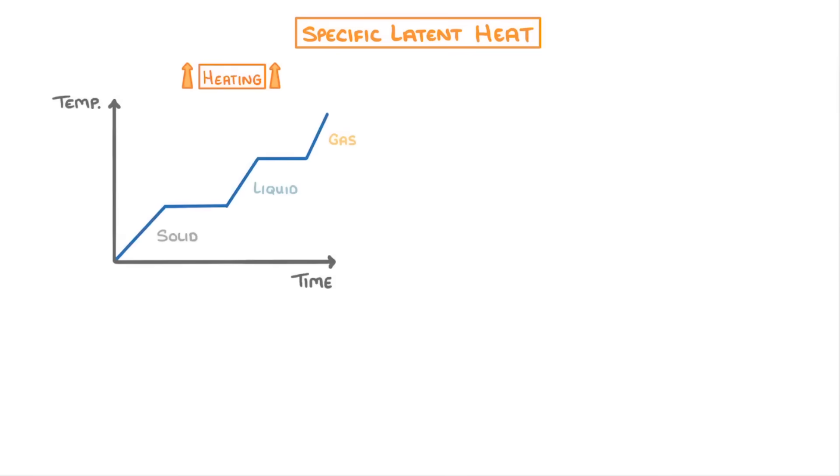If you take a look at this graph, which shows how the temperature of a substance changes with time as we heat it, you can see that it's not a straight line like you might expect. This is because when the substance is changing state, so at the melting point or the boiling point, the energy that we're providing is being used to weaken or break the forces holding the particles together, rather than increasing the particles' internal energy.